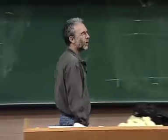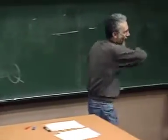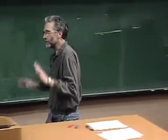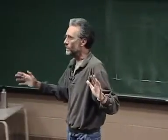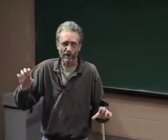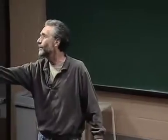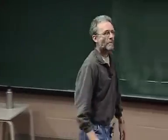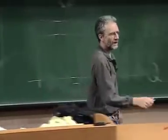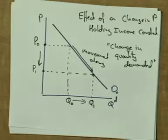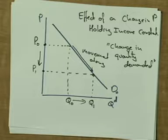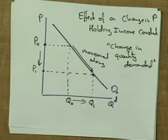If the change in quantity demanded is caused by anything else — something which isn't on the axis — it's a shift in the whole curve. And just to make sure that everybody carefully distinguishes movements along the curve from shifts in the curve, we even give them special names. A movement along the curve, like this, is not a change in demand.